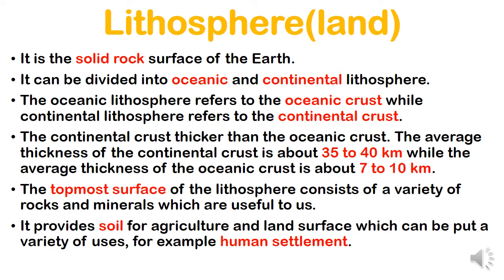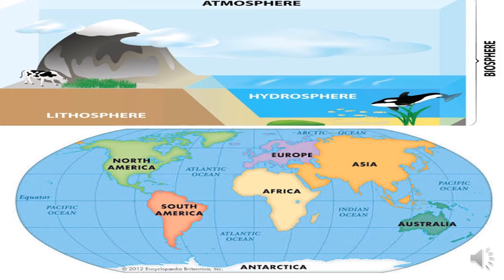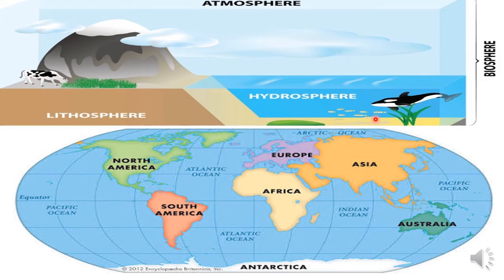Continental land is where we live — like islands and countries. Look at the pictures carefully. You can see lithosphere and hydrosphere. Under the hydrosphere, the yellow-colored area where aquatic plants grow — that land is called oceanic crust or oceanic lithosphere. Where the cow is standing — that is continental crust or continental lithosphere.